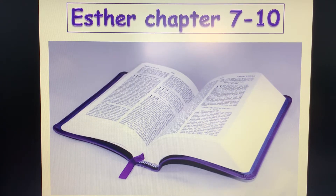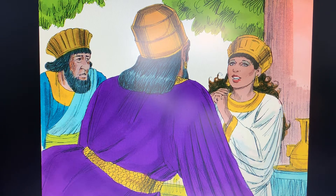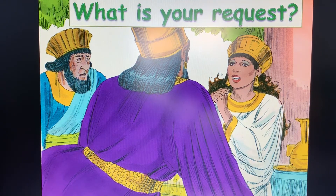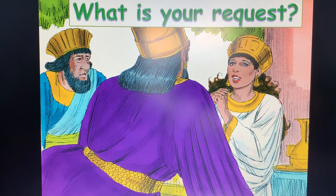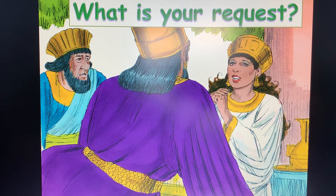Today's lesson finishes the Book of Esther, covering chapter 7 to the end of chapter 10. Can you remember where we left off? Haman had been invited again to a second banquet that Queen Esther had prepared. The king was curious to know what the queen wanted, so he asked Esther again: 'What is your request? It shall be granted.' Esther knew she was taking her life in her hands again, but an all-powerful God gave her the strength and courage to reply.